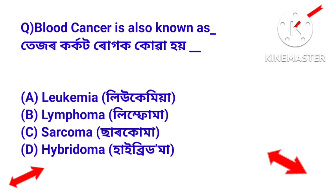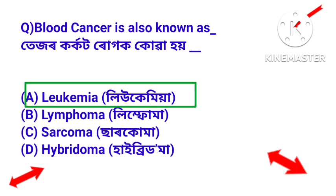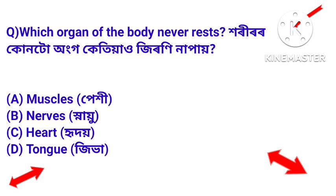Blood cancer is also known as leukemia. Next question: which organ of the body never rests? Options: a) muscles, b) nerves, c) heart, d) tongue.